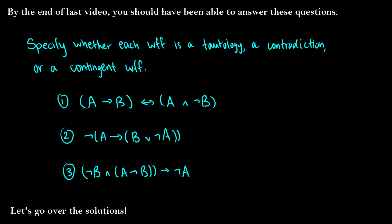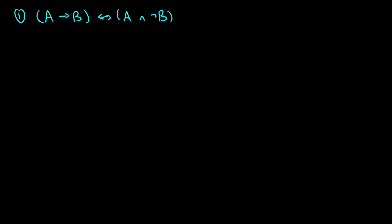Let's get into the solutions. For the first one, we want to say if it's a tautology, a contradiction, or a contingent well-formed formula. What we're doing is building truth tables for these and seeing what our final rows are.